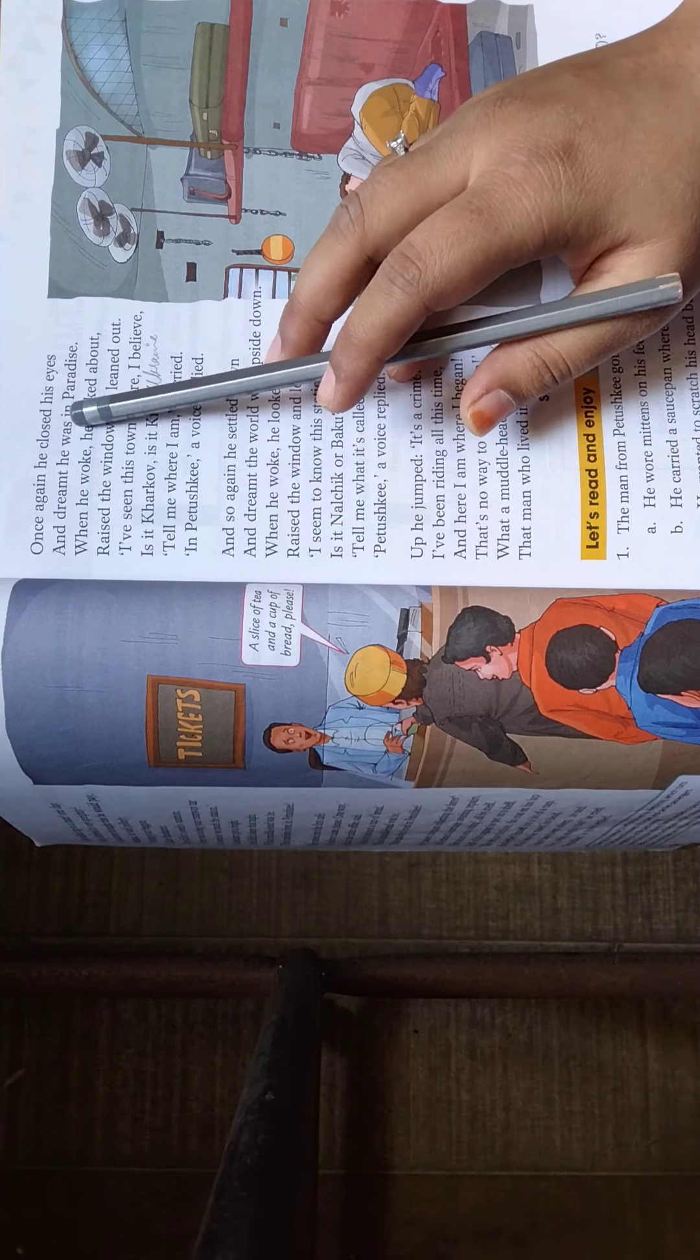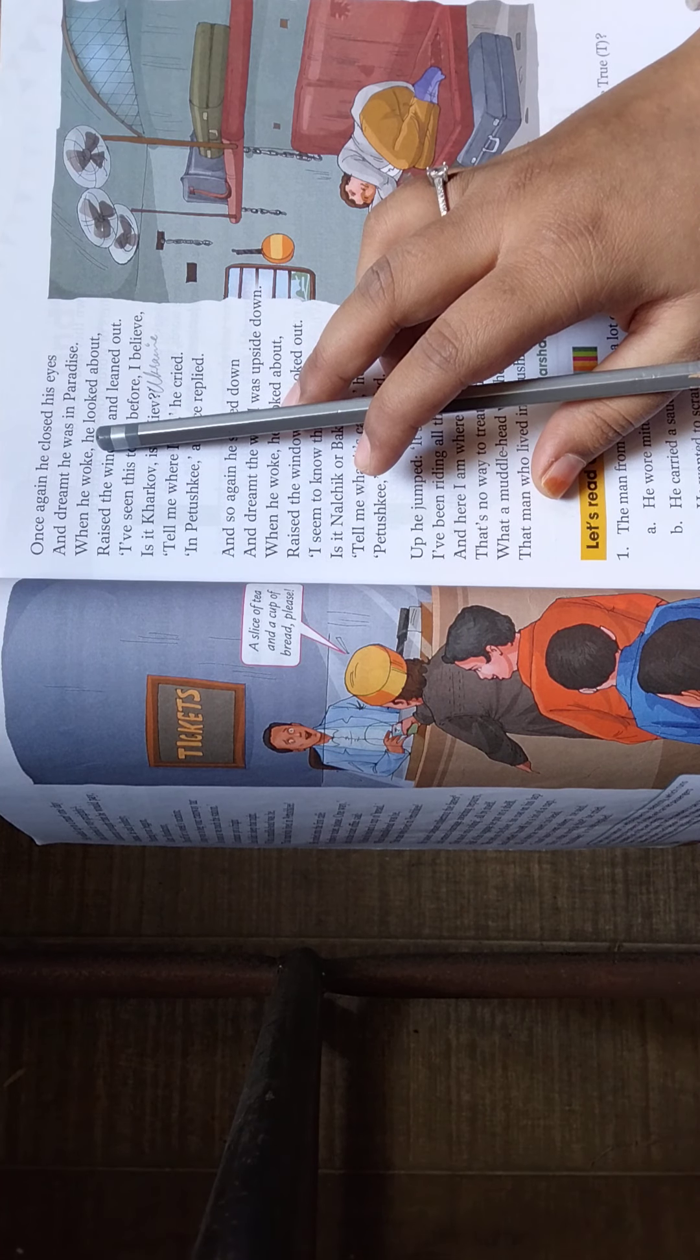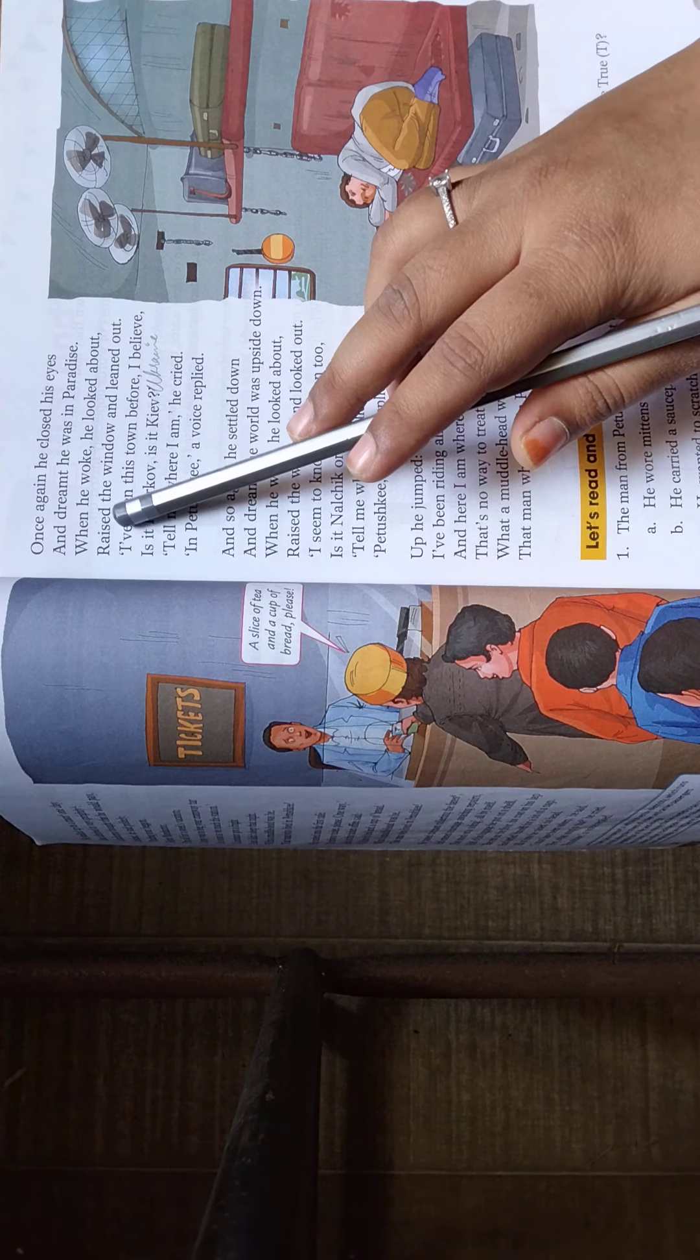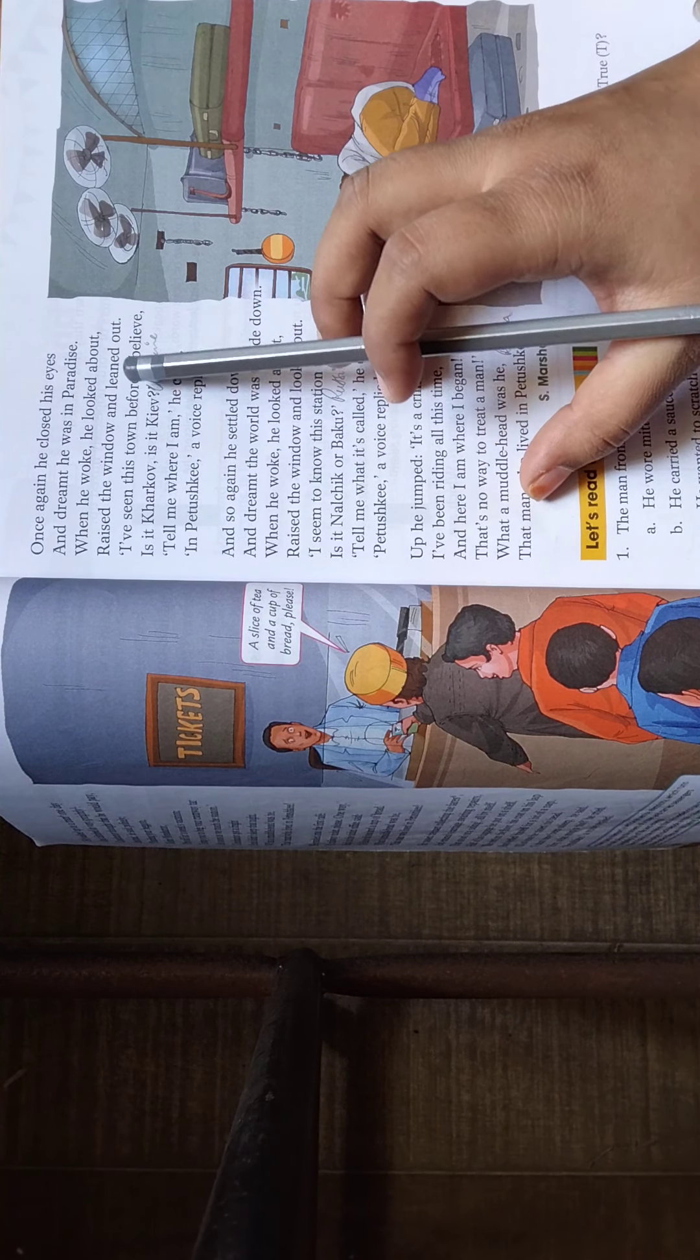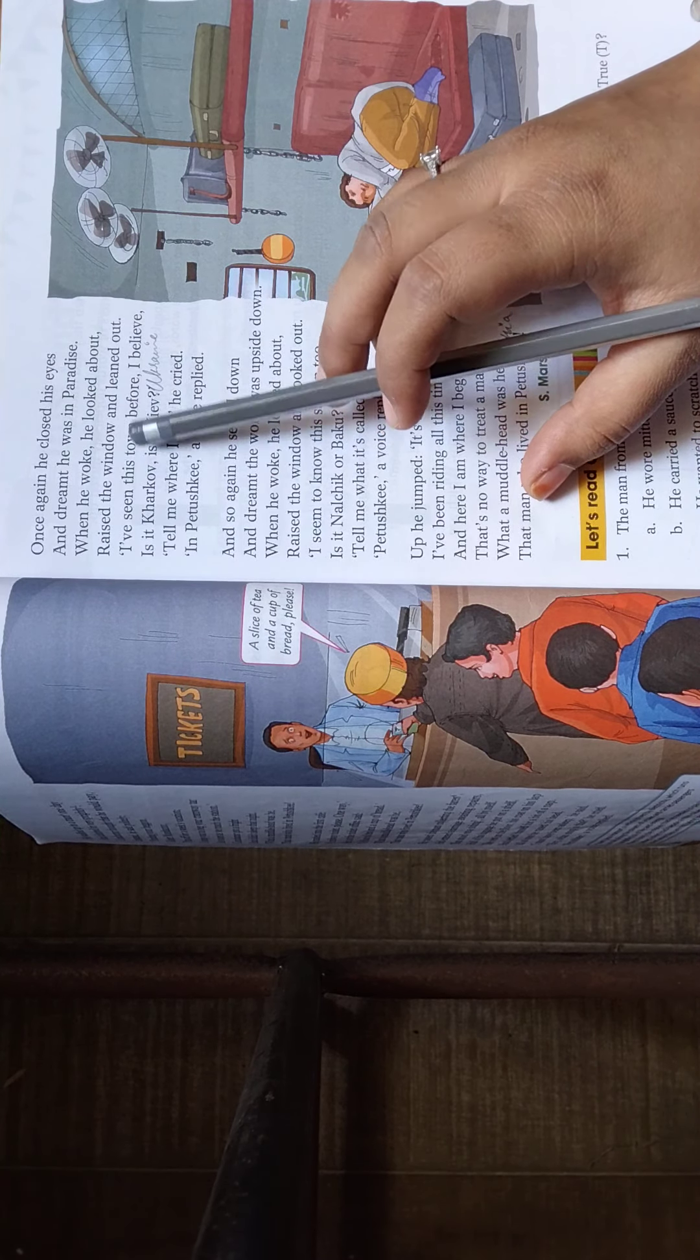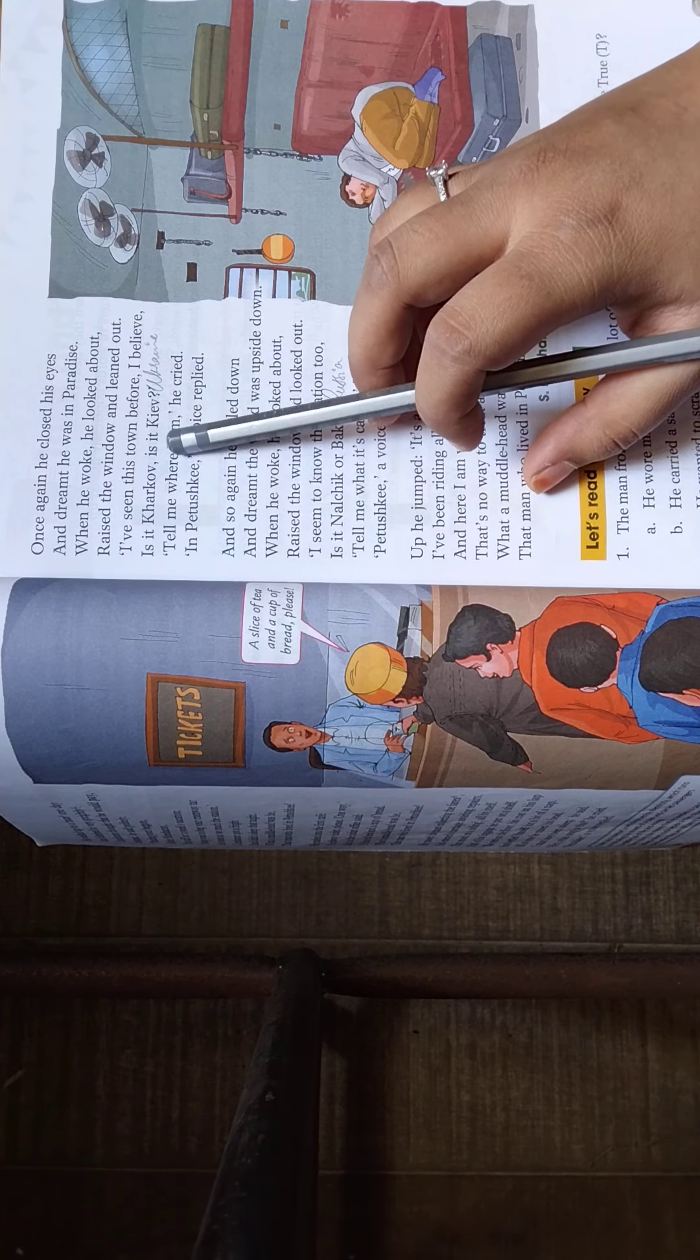Once again he closed his eyes and dreamt he was in paradise. फिर उसने वापस से आँखें बंद की और उसको सब ऐसा लग रहा था कि मैं जन्नत में हूँ. When he woke, he looked about, raised the window and leaned out. फिर वो उठा, window को open किया और देखा. I have seen this town before, I believe it is Kharkov. It is Kiev.